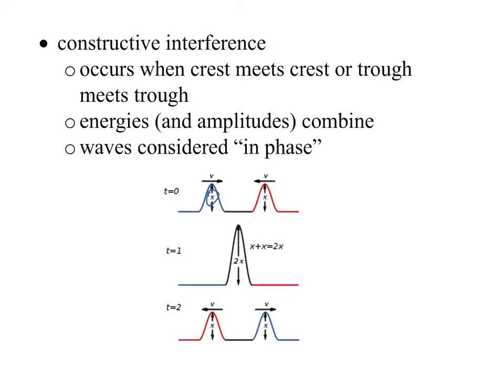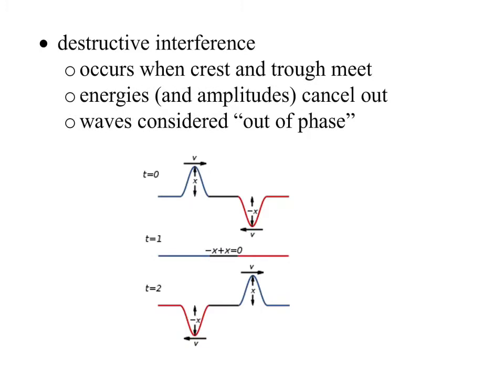So crest meets crest, and then their amplitudes combined. So in this case, say the amplitudes are exactly the same. So we have two amplitudes of X. And then when they run into each other, they create a much bigger wave that is now two X. It's two times as much because we have two amplitudes of X, and then they just keep going on their merry way away from each other. So first they're moving towards each other, they superimpose, and then they move away from each other.